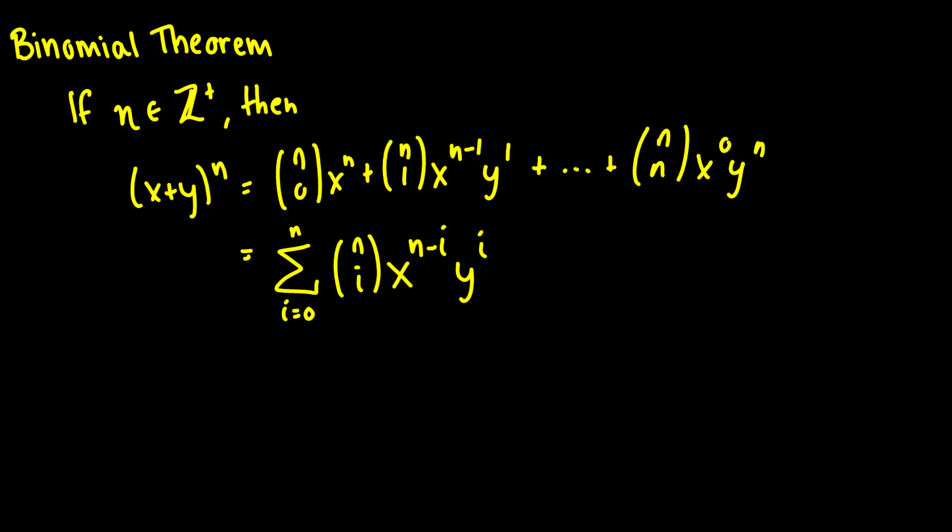Sometimes we have polynomials that when expanded can be a little bit difficult to do step by step. So we have this really cool binomial theorem that does it for us. It says that if n is a positive integer, then (x + y)^n = n choose 0 times x^n, plus n choose 1 times x^(n-1) times y^1, plus dot dot dot, all the way up to n choose n times x^0 times y^n.